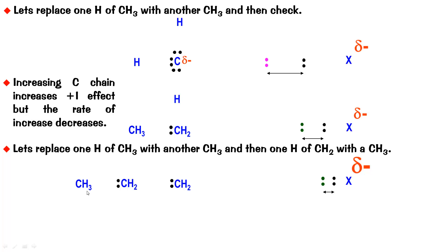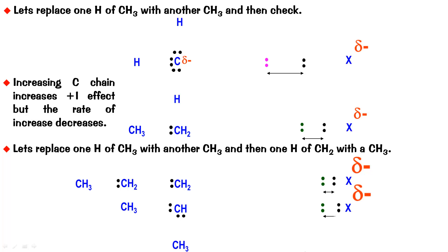Now instead of putting the third methyl at the end of the chain, let's put it on the first carbon directly. With two methyls attached to the first carbon, both methyls push electrons directly into that carbon, building up much more negative charge there than a single methyl or a methyl at the end of a chain. This greater negative charge pushes the electrons towards X more effectively. So a methyl placed closer to the reference bond has a greater impact. This confirms that inductive effect decreases with distance — decrease the distance and inductive effect increases; increase the distance and it decreases.